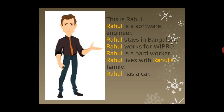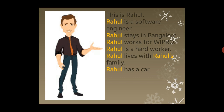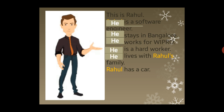The first 'Rahul' is needed because you don't know who that person is, but repeating Rahul seven times is so boring. Now see how P is going to help. We rewrite: 'This is Rahul. He is a software engineer. He stays in Bangalore. He works for Wipro. He is a hard worker. He lives with his family. Rahul has a car.' All seven repeated 'Rahul's have been replaced with 'he' — and 'he' is a pronoun.